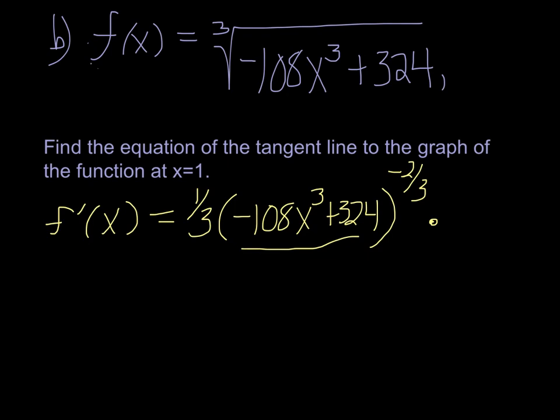So we get negative 324x squared, and we take the derivative of the inside. If we plug 1 into this, we get negative 3.